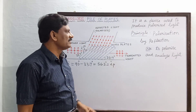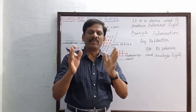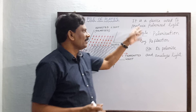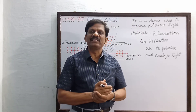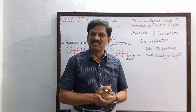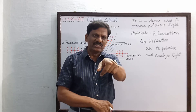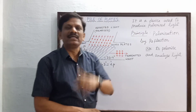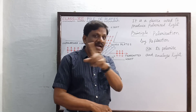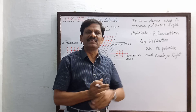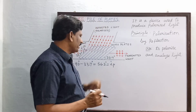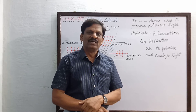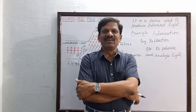This is normally a three-mark question in the board examination. The pile of plates is a device used to produce polarized light. It works on the principle of polarization by reflection. Its construction consists of a cylindrical tube inside which sheets of glass are stacked one over the other at an angle of inclination of 33.7 degrees with the axis of the tube, so that the angle of incidence is 56.3 degrees, which is the polarizing angle for glass.